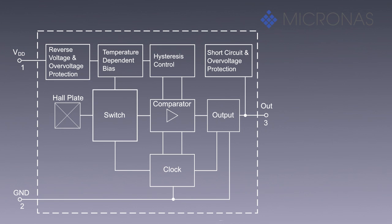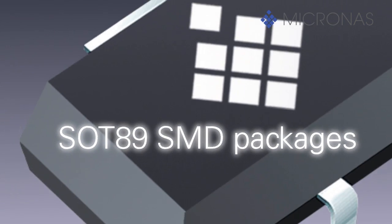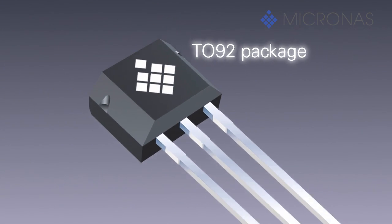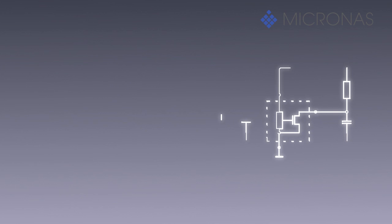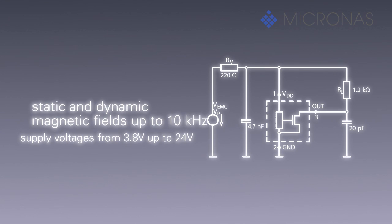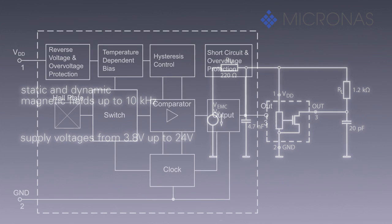The bipolar switches are produced in CMOS technology and are available in an SMD version as well as in a leaded TO92 package. The sensors operate with supply voltages from 3.8 volts to 24 volts with static and dynamic magnetic fields up to 10 kilohertz.